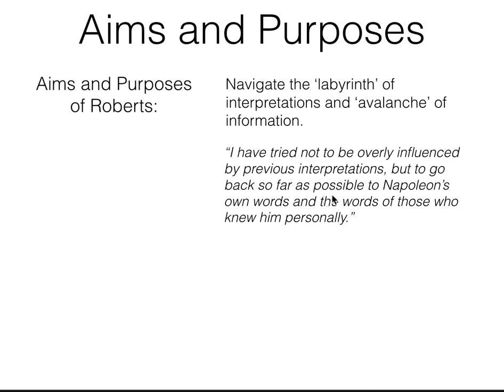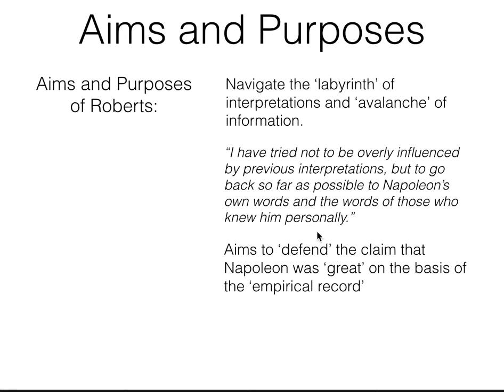He said he has gone back, so far as possible, to Napoleon's own dependable words — he's critical of Napoleon and does the work of a historian in testing his sources — and the words of those who knew him personally. So he's tried to go back to the empirical record. He also aims to defend the claim that Napoleon was actually great, that he deserves the title. He does this on the basis of the empirical record — checking documents, visiting battlefields, doing good, thorough history. But in the introduction he says, 'I hope by the end of this book that you will agree with me that Napoleon was truly great.' So he's out to push that line of argument.